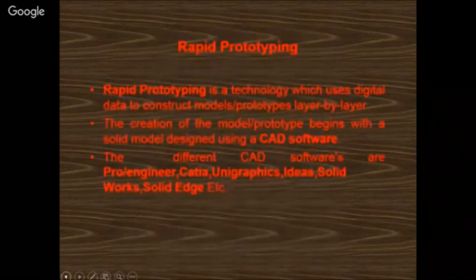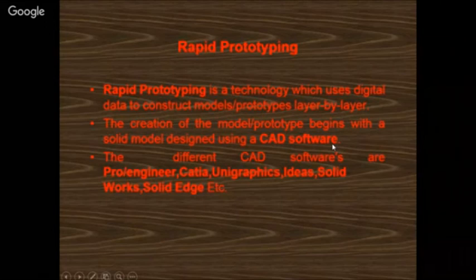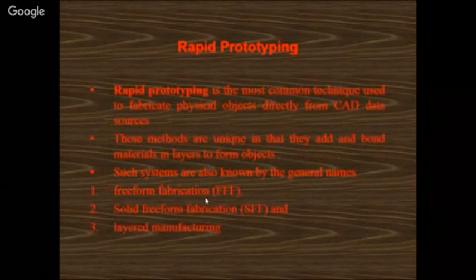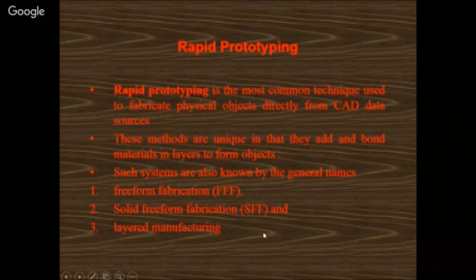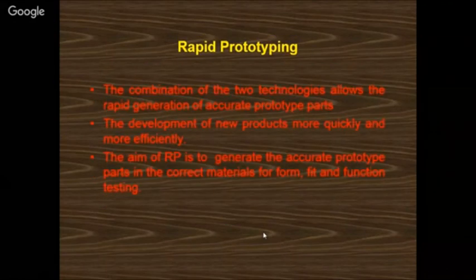Rapid prototyping is a technology that uses digital data to construct models and prototypes layer by layer. Since it constructs layer by layer, it is also called layer manufacturing method or additive manufacturing process — all the same. The creation of the model begins with a solid model design using CAD software (ProEngineer, Catia, UniGraphics, Ideas, SolidWorks, Solid Edge). The system is also known by the general names: Freeform Fabrication, Solid Freeform Fabrication, and Layered Manufacturing. The six techniques are: LOM (Laminated Object Manufacturing), Stereolithography, Selective Laser Sintering, 3D Printing, Inkjet, and Fused Deposition Modeling.